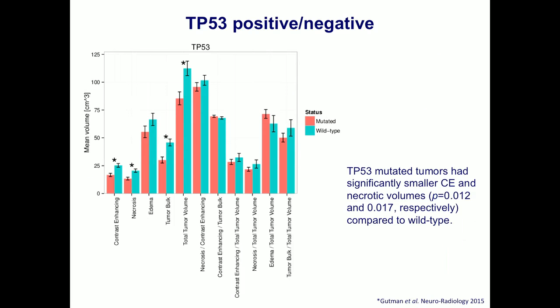Similarly, we looked at these volumetric measures and the pathways associated with them, finding that the volumetric composition of a GBM tumor was very important and driven by different biological pathways like immune response, inflammation, and cell cycling. Because we also had sequencing data, we looked at how, for example, a P53-mutated tumor is reflected in gene expression data and in the phenotype — finding significant correlations. A P53 mutation tumor had significantly smaller contrast-enhancing and necrotic volumes compared to wild-type.